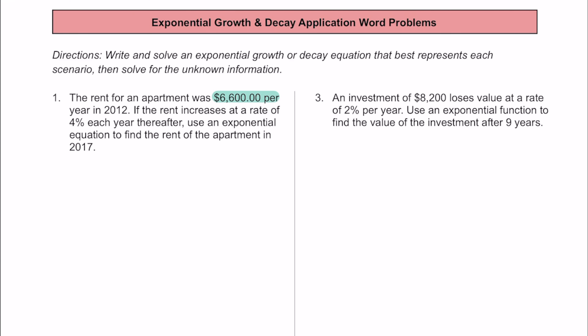Right away, we want to identify that the starting rent was $6,600 per year in 2012. Then we want to find out what the rent change is going to be — it looks like the rent is increasing at a rate of 4% each year after that, so it's important to know that we have an increase. Finally, we're being asked to figure out what that rent is going to be in the year 2017, compared to 2012 where we already have some information.